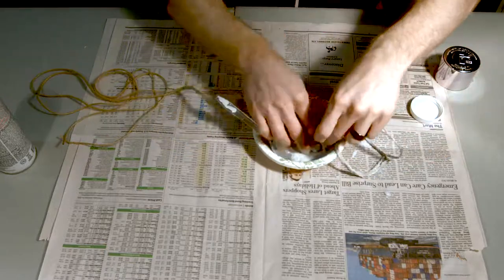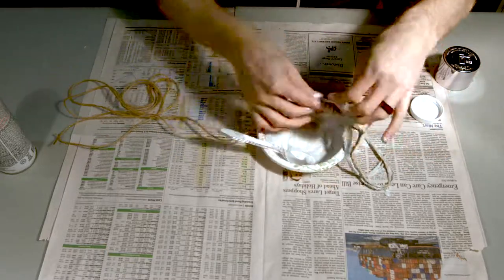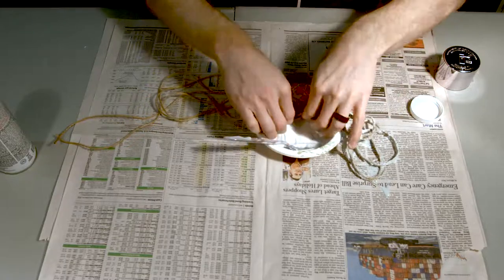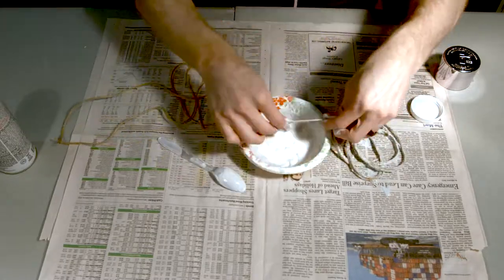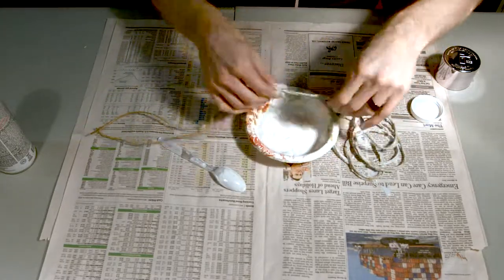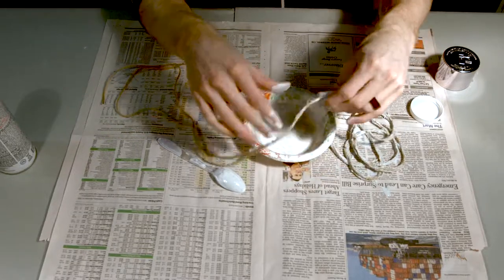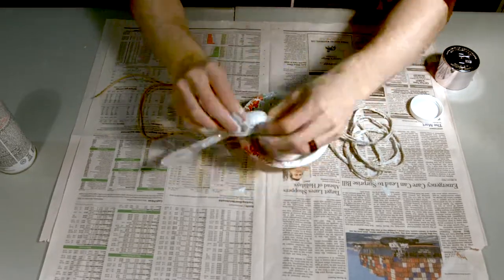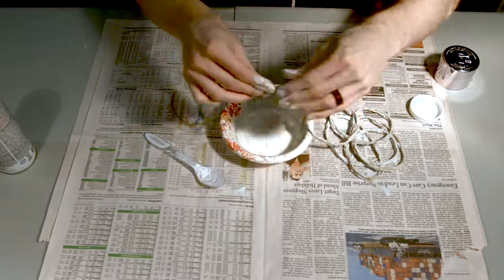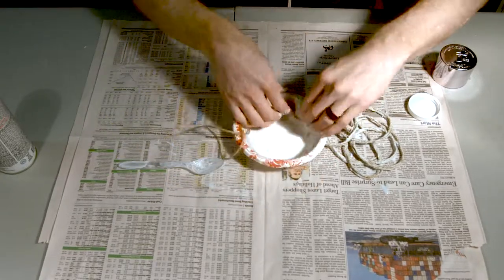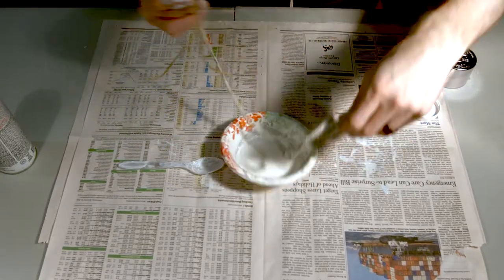This is where it will get messy because you'll want to dunk the whole string inside this Mod Podge. That's what will make it hard and look more like barbed wire. As you're mixing it, you'll want to twist the string around itself so that it gets that twisty look that barbed wire has.